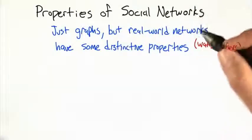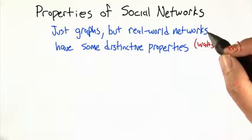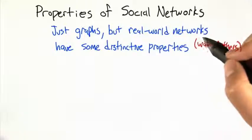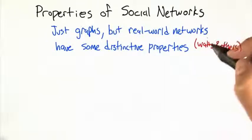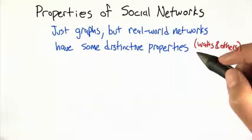Social networks are just graphs, like the kinds of graphs we've been studying. But the real-world networks that you actually find have some distinctive properties, and these have been documented by researchers like Duncan Watts and others.